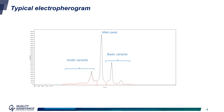Using image capillary isoelectric focusing, or ICIEF, electrophorograms such as the one displayed here are obtained. Here we see the main peak, or main isoform. On the left side, we see the acidic variants, which have a PI lower than the main variant, and on the other part of the electrophorogram, there are the basic variants.